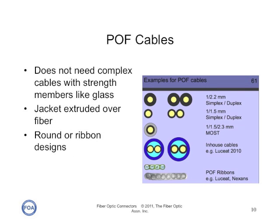Because POF cables are typically premises cables and don't need to be pulled long links like outside plant cables, they don't need lots of strength members or fancy jackets to protect the fibers. So a lot of the POF cables are simply a plastic jacket extruded over the plastic fiber. But there are other types of cables, including multi-fiber cables inside of a single jacket, and even ribbon cables that can be used for instances where multiple links are needed, even running them sometimes under carpet.